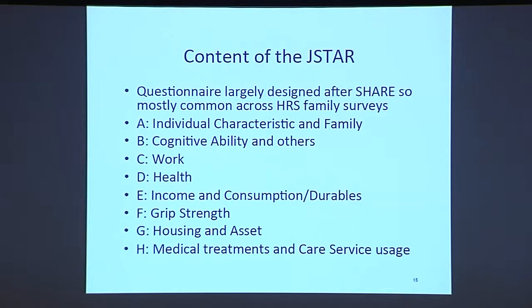Moving on to the content of JSTAR: the questionnaire is largely designed after SHARE, so mostly common across HRS family surveys. There are eight sections: Section A contains individual characteristics and family; B contains cognitive ability; C contains work information; D contains health information; E is income and consumption including durables; F is about grip strength; G is housing and asset; and H is medical treatments and care service usage.